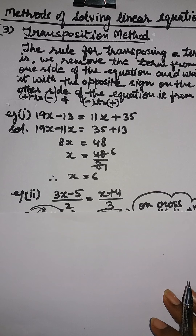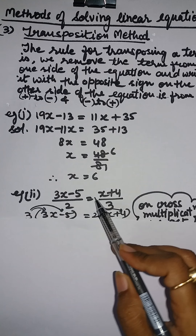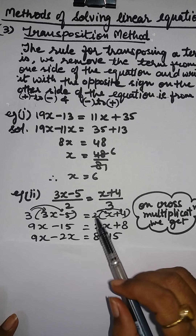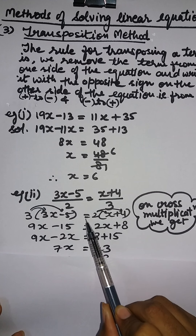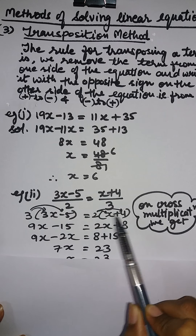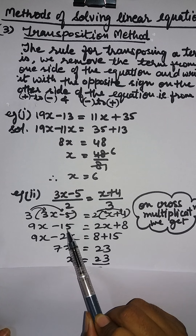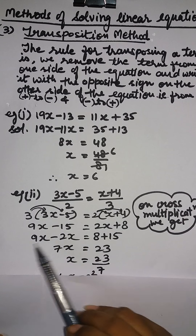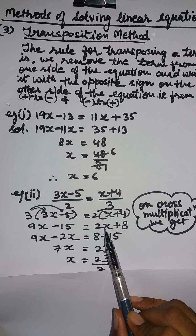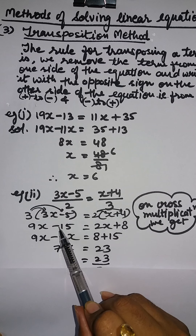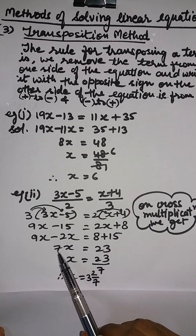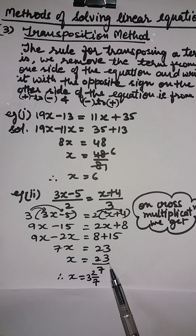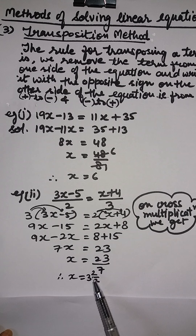Let us take another example: (3x minus 5) upon 2 equals (x plus 4) upon 3. On cross multiplication, we get 3 multiplied by (3x minus 5) equals 2 multiplied by (x plus 4), giving 9x minus 15 equals 2x plus 8. We transpose 2x to the left side and minus 15 to the right side, changing signs accordingly, giving 7x equals 23. Dividing both sides by 7, we get x equals 23 by 7. Here we conclude this topic.